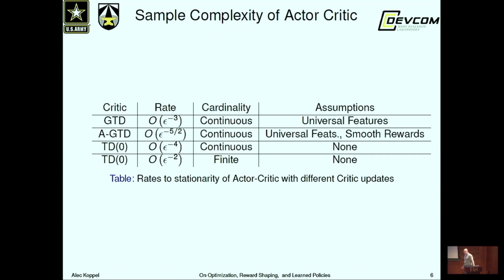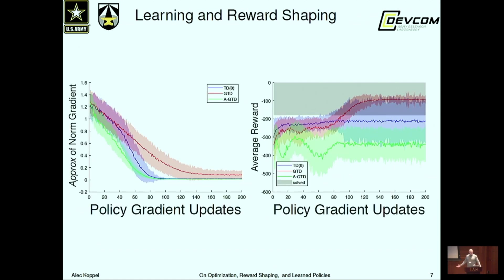If the critic is converging more slowly, you get a slower rate overall. You get something slower with gradient temporal difference; we developed an accelerated variant using a Nesterov-type scheme that converges faster. TD converges faster in a finite space but a little slower in a continuous space. On a navigation problem, the norm of the gradient of the value function shows that accelerated GTD converges very fast, then TD, then GTD is slowest.